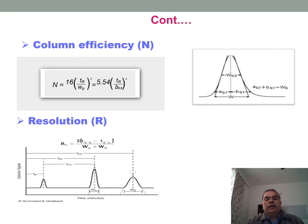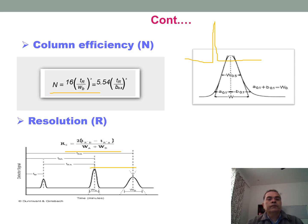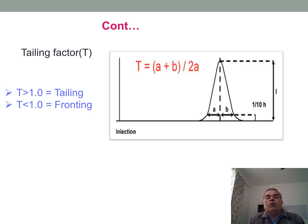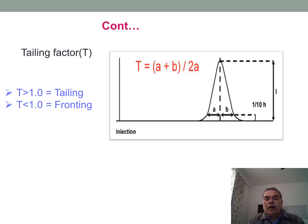Column efficiency describes the narrowness of the peak and is calculated by a specific formula. Resolution describes the separation between two peaks and is calculated by its formula. Tailing factor is calculated by the formula (a + b) / 2a. When the tailing factor is greater than 1, tailing occurs; when less than 1, fronting occurs.